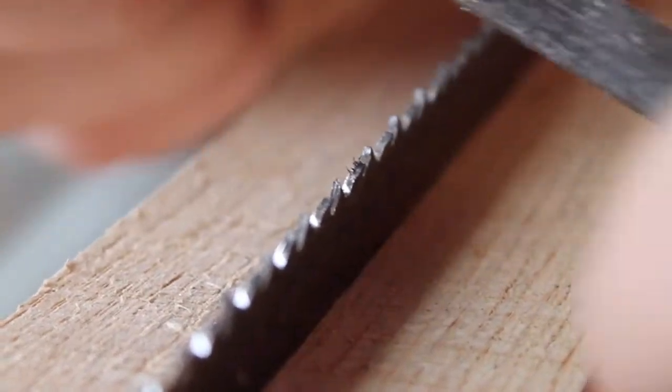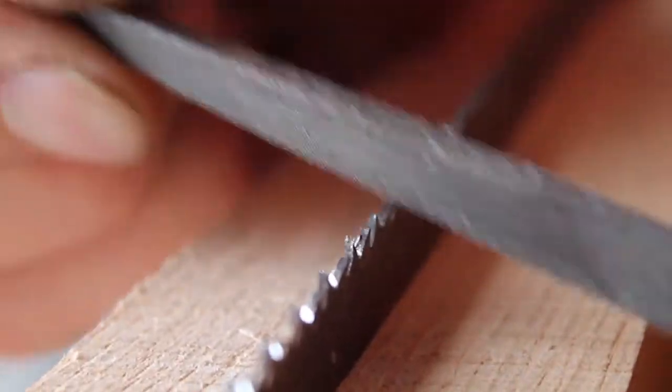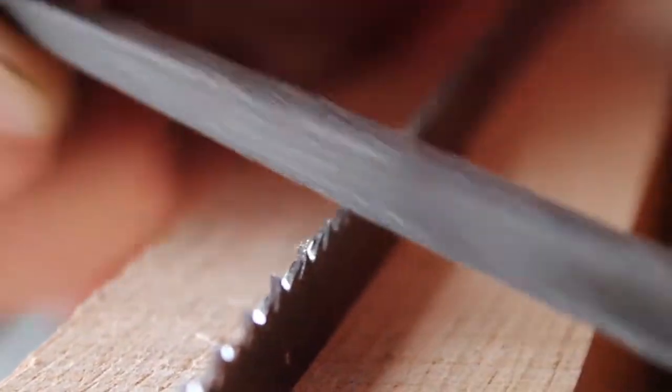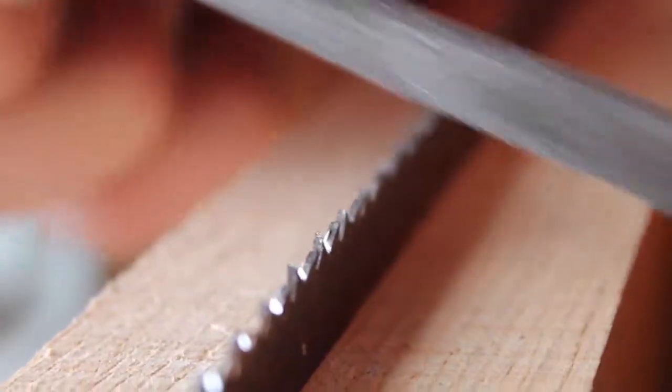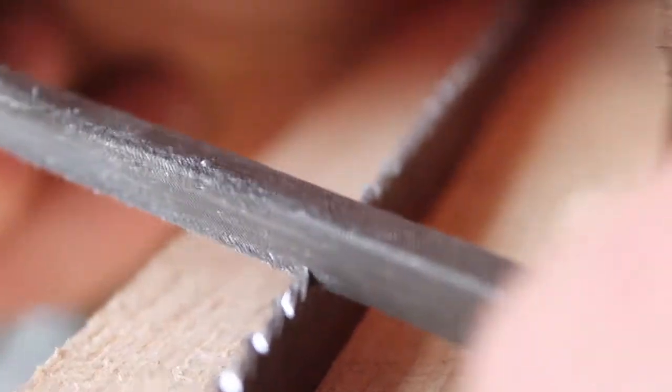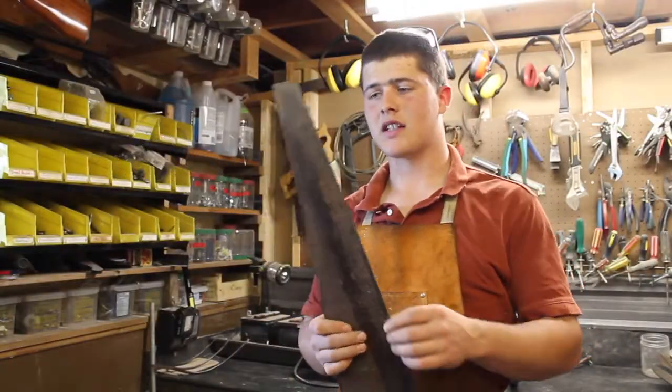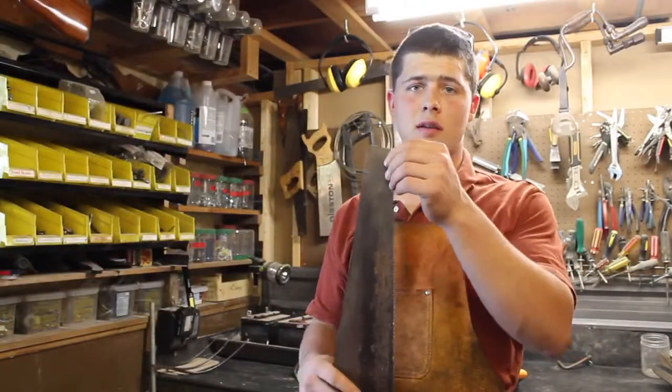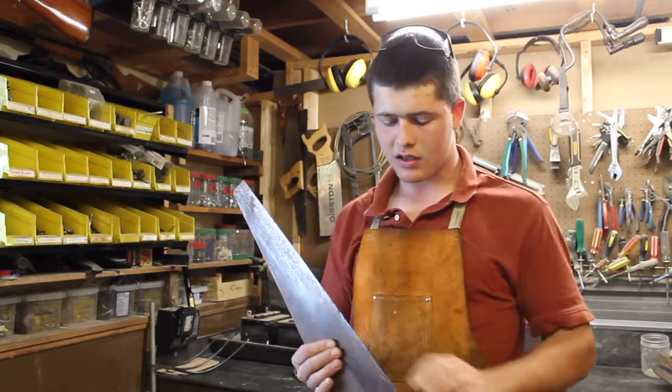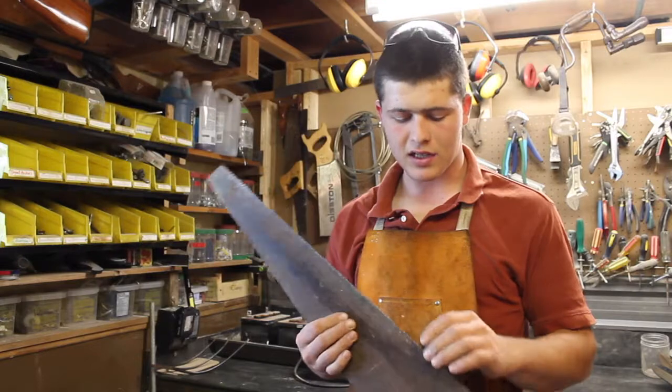Obviously, sharpening a saw with this many teeth takes a long time. But when you've got both sides sharpened and it's all shiny, you can look down it and see nice, really shiny teeth.